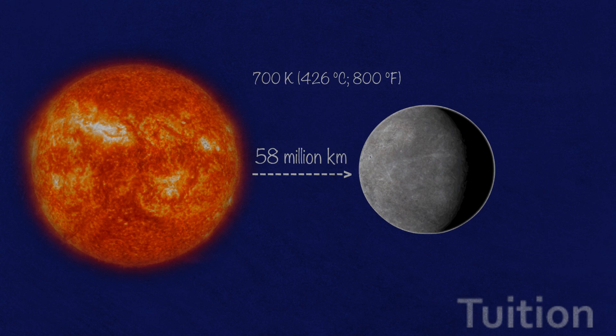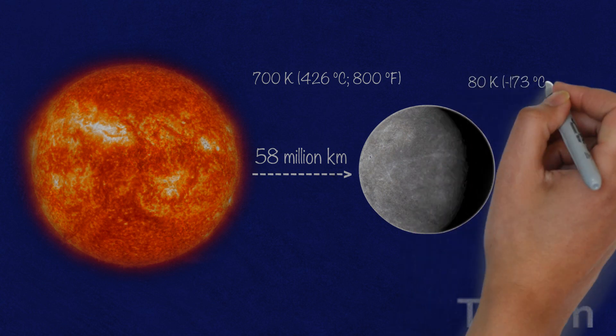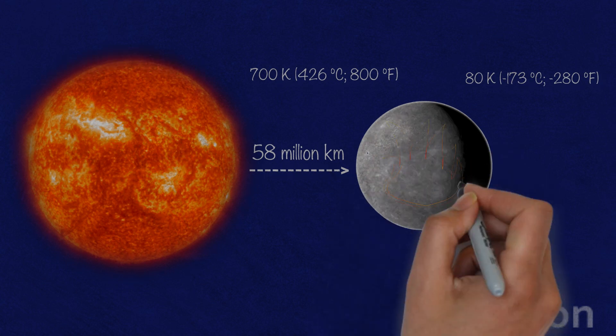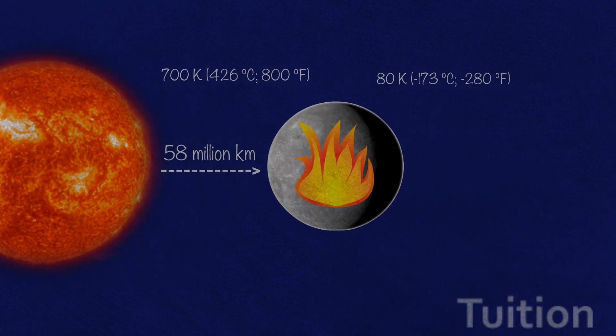On the other side, temperatures plunge down to 80 Kelvin, which is negative 173 degrees Celsius. Mercury is for sure hot.